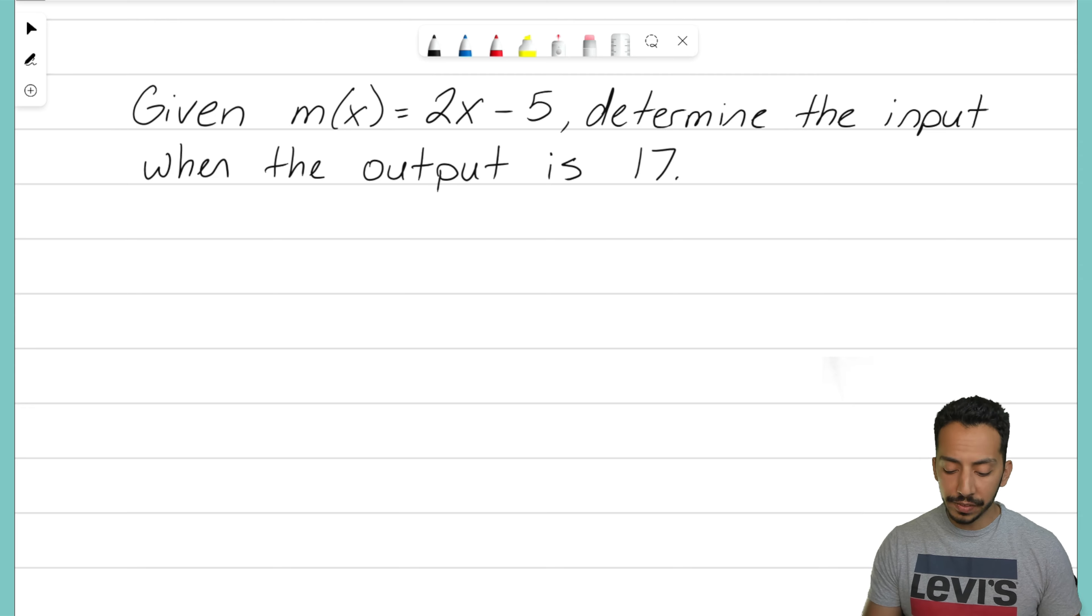So this is a little different than our previous videos because now we're saying I know the output. The output ends up being 17. I want to know what the input is. We don't know what our x value is but we want to determine what that is.